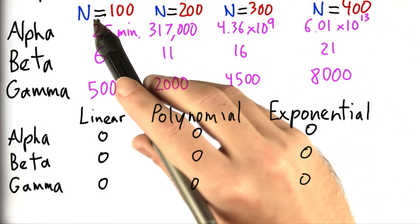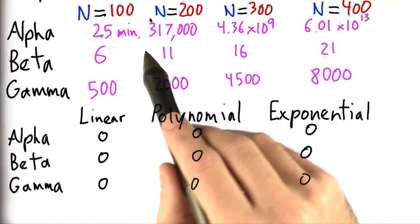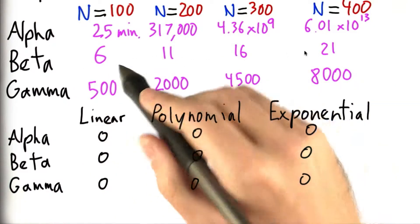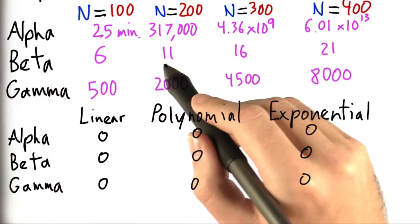Now, as we grow the input size, notice that we're growing the input size linearly. And as we grow it linearly, the time it takes beta also grows relatively linearly.